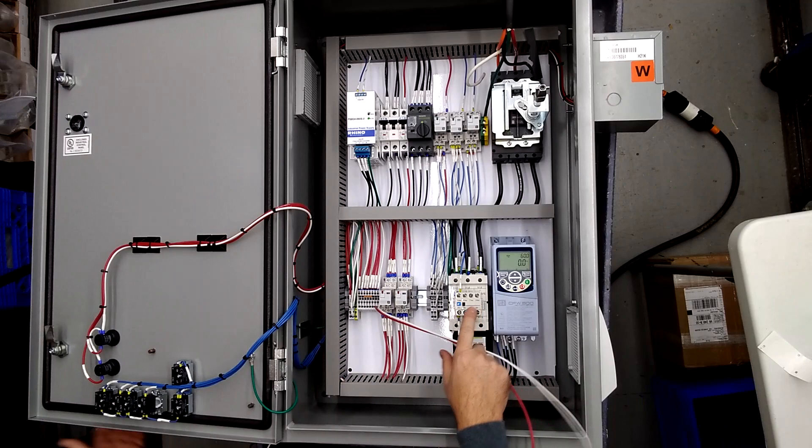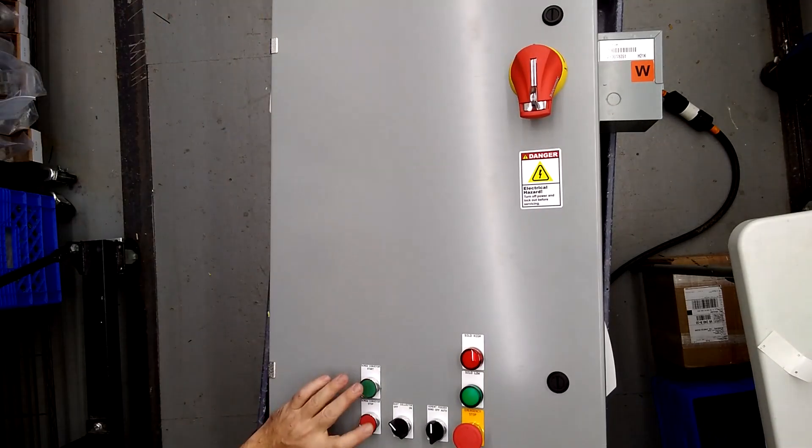Next we have the 30 horsepower for your screw conveyor and it's a basic start stop. Press the start, press the stop.